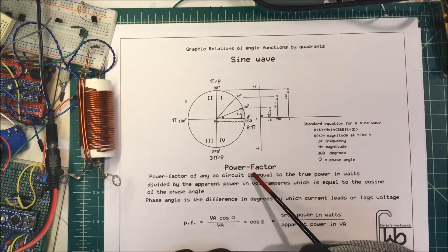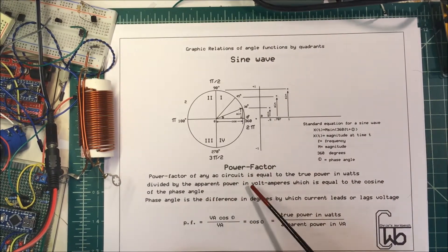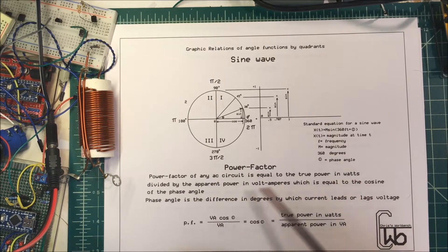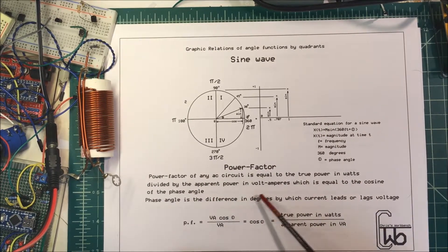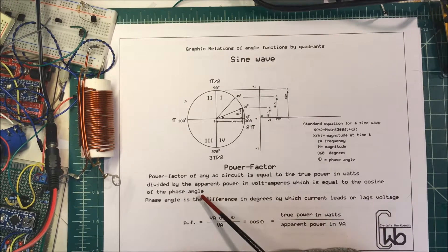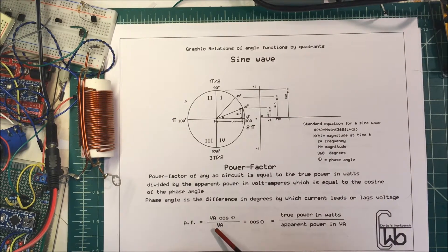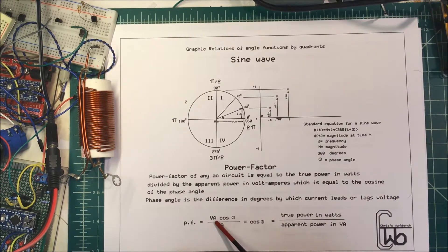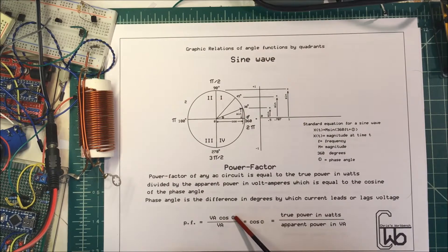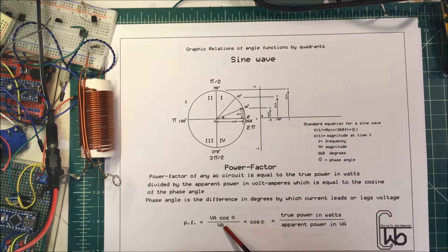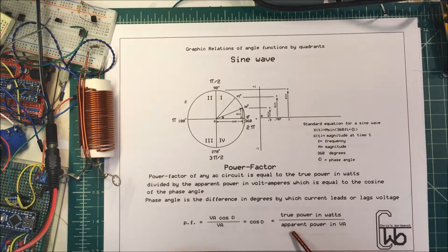The power factor of any AC circuit equals the true power in watts divided by the apparent power in volt-amps, which equals the cosine of the phase angle. The phase angle is just the difference in degrees by which the current leads or lags the voltage. So power factor equals VA times the cosine of the phase angle divided by VA — that is, true power in watts divided by apparent power in VA.